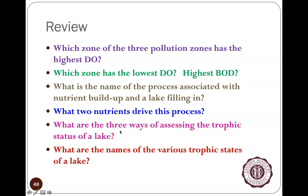What are the three ways of assessing the trophic status of a lake? I'm particularly talking about Bob Carlson's paper and the traditional approach. We should know we're talking about total phosphorus, Secchi depth, and chlorophyll-a — those three measures.